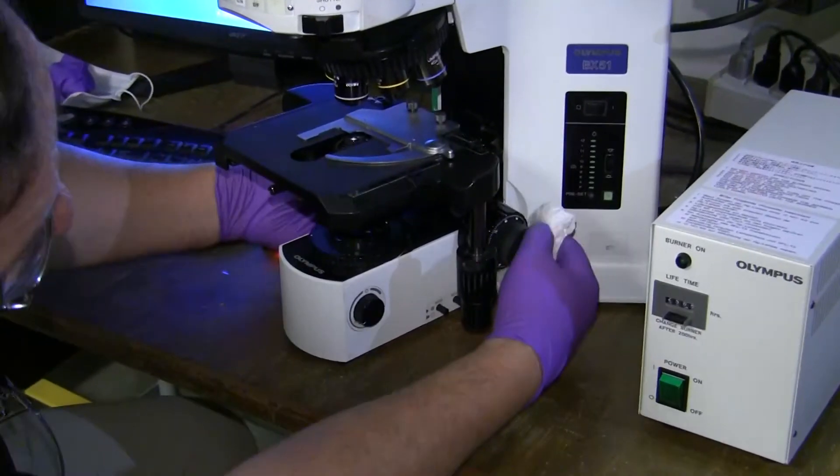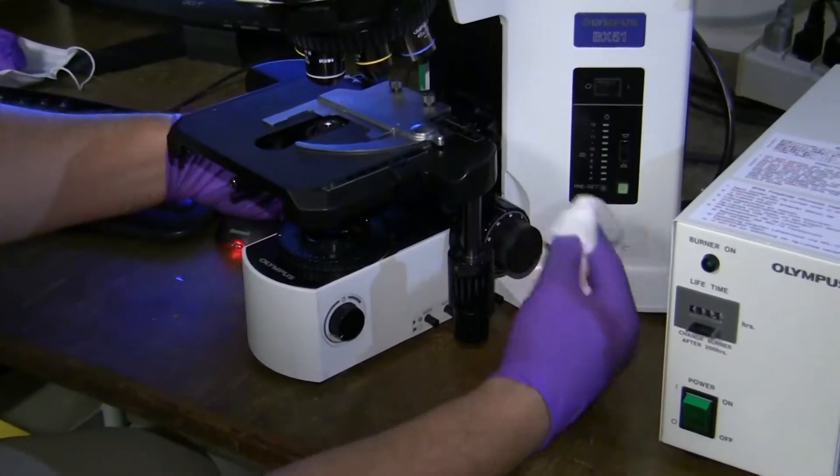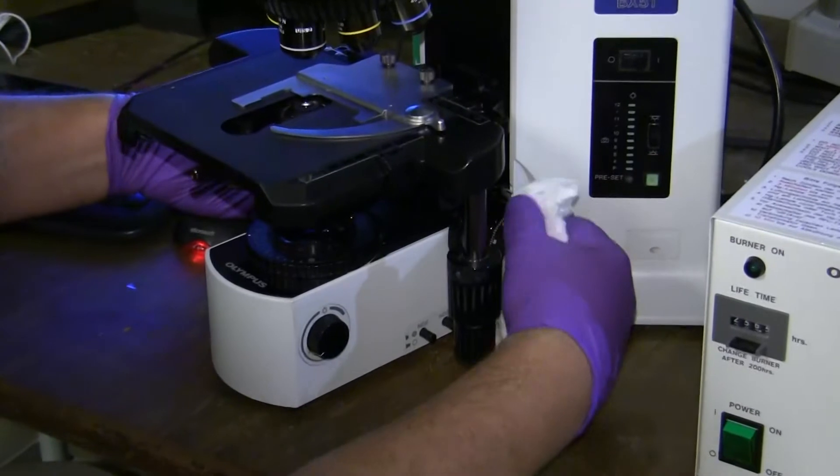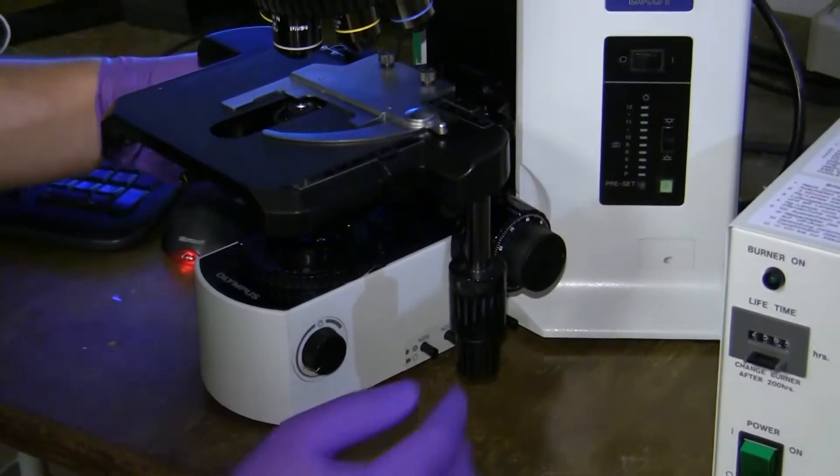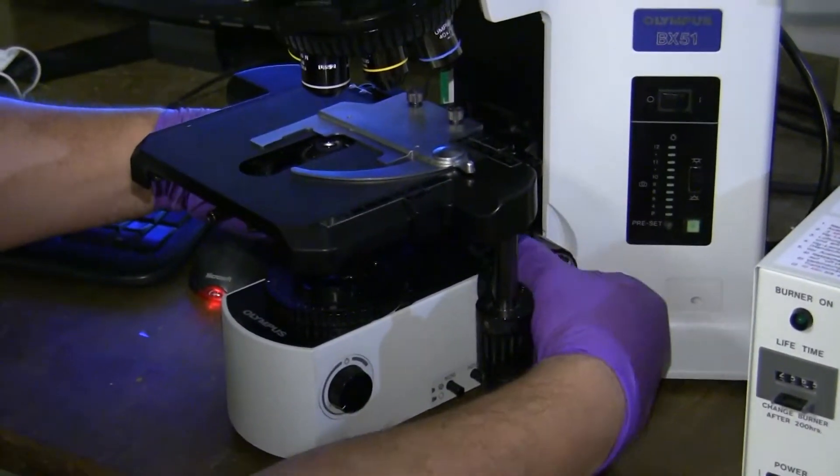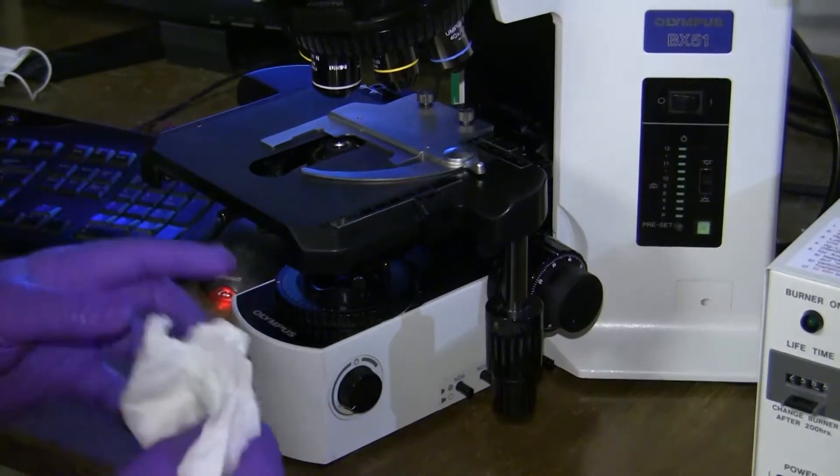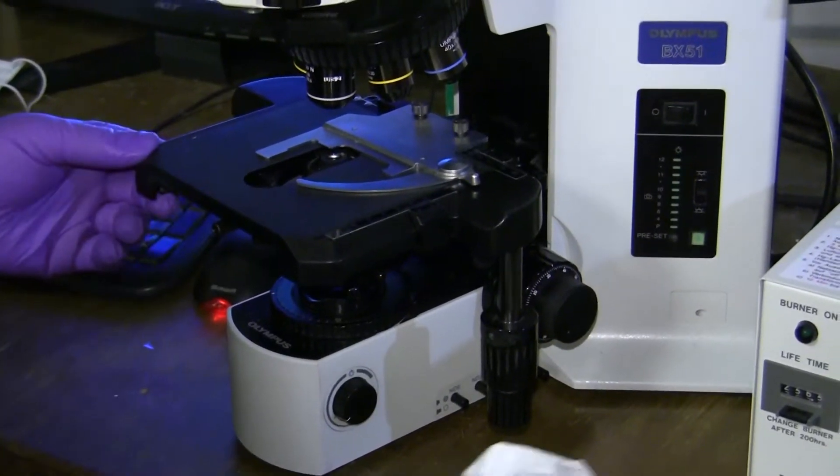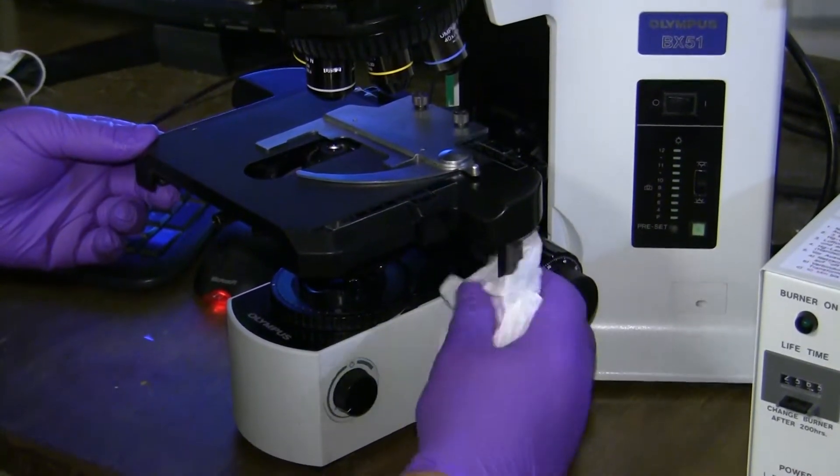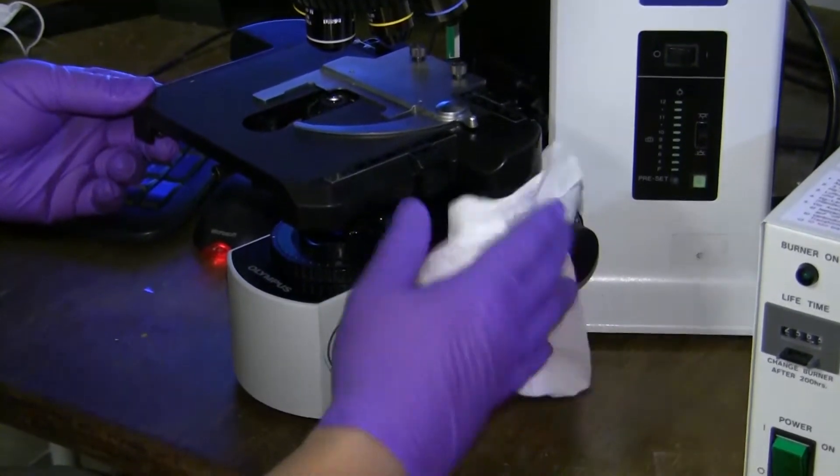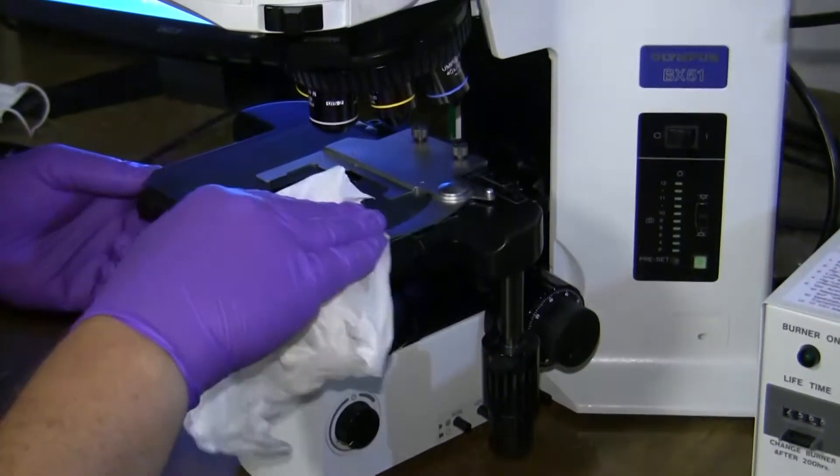So at the bottom we have our focusing knobs. So give them a nice wrap on both sides. Then we go to the XY stage. Again, we want to touch and clean the knob. I also suggest clean the top area.